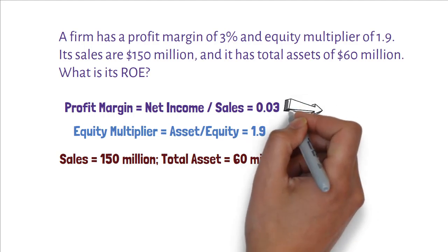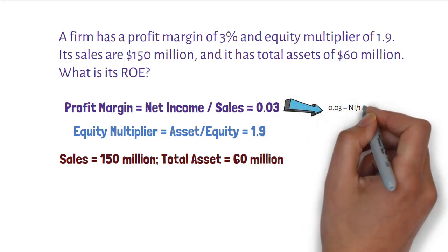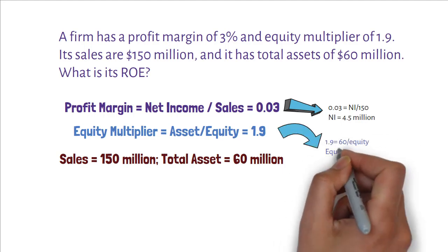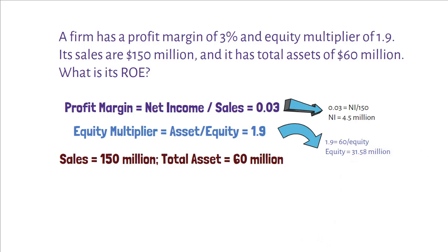Now, plug 150 million sales into the profit margin to get a Net Income of 4.5 million. Next, plug 60 million of assets into the equity multiplier to get an equity of 31.58 million.